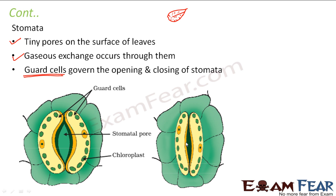So far, what did we see? We saw that plants obtain their own food by the process of photosynthesis. What do they need for photosynthesis? They need carbon dioxide, sunlight, chlorophyll, and water. How do they obtain carbon dioxide? From air, mostly through stomata on the leaves. Chlorophyll is already present in the leaves. Sunlight is naturally present during daytime. Water is present in the soil, and we also externally water the plants.